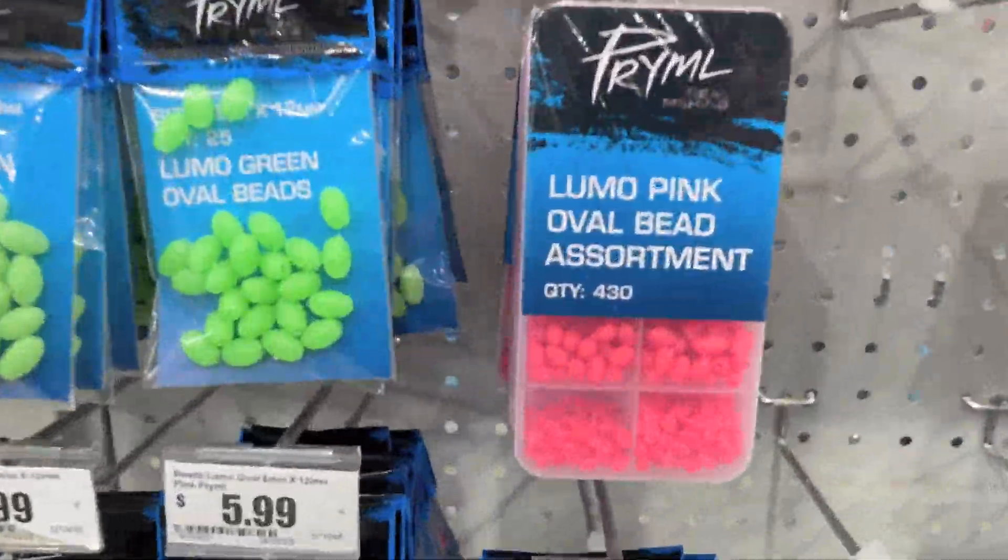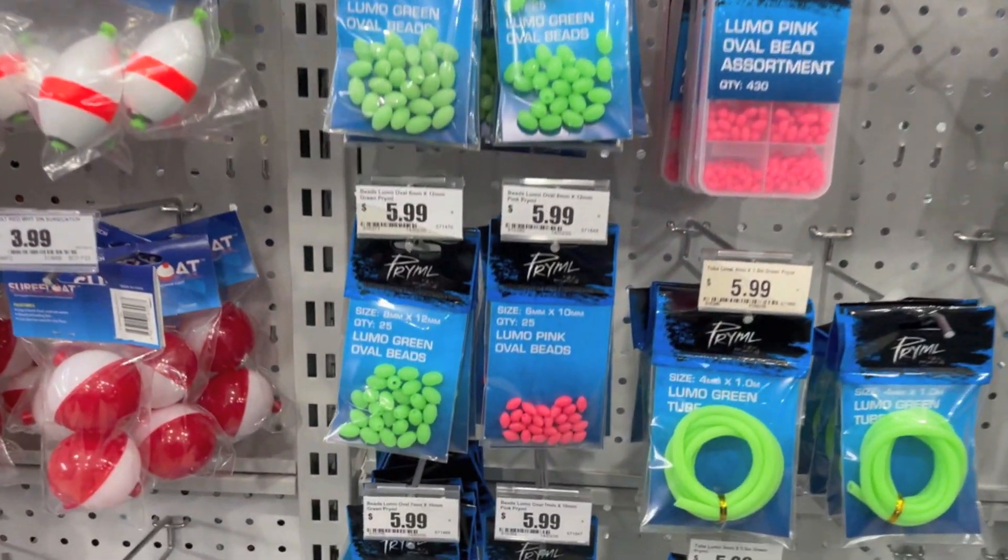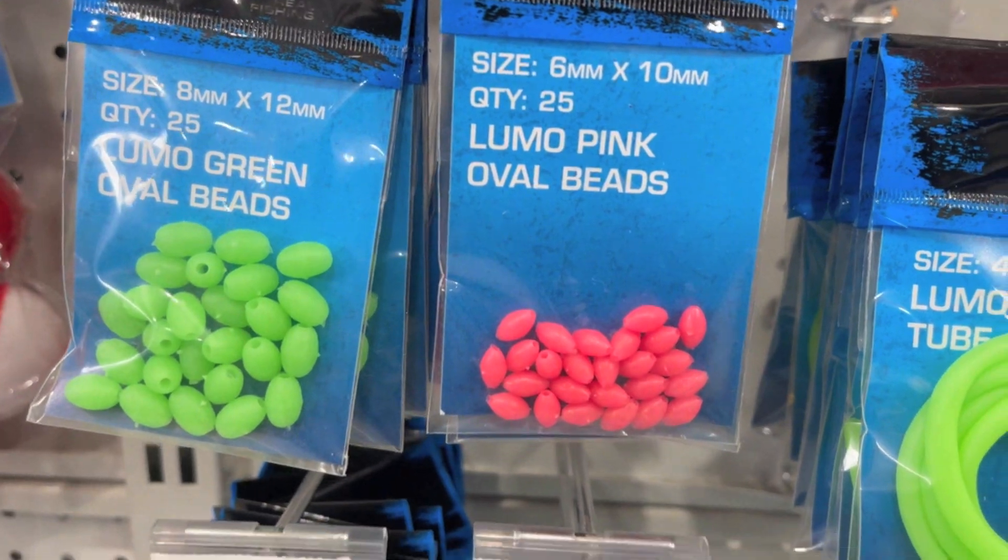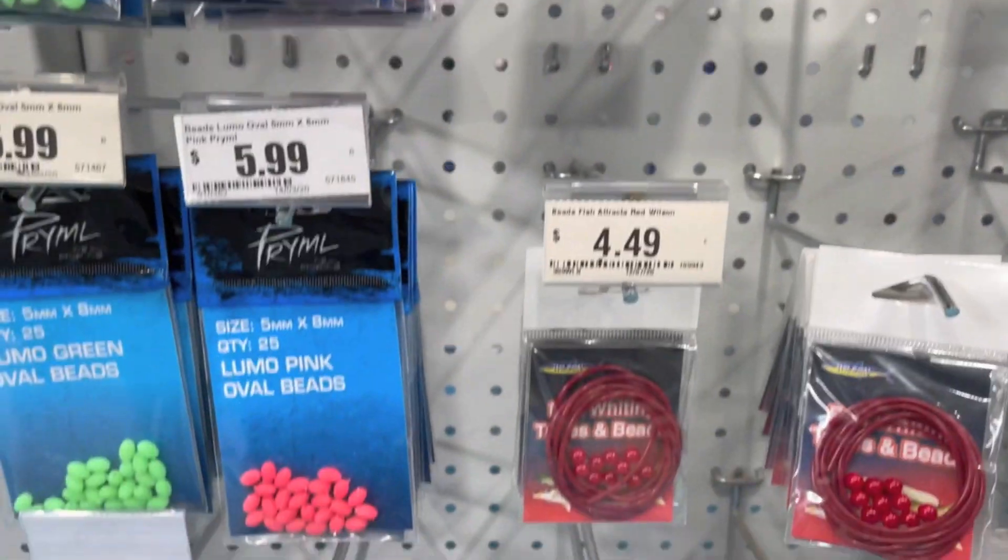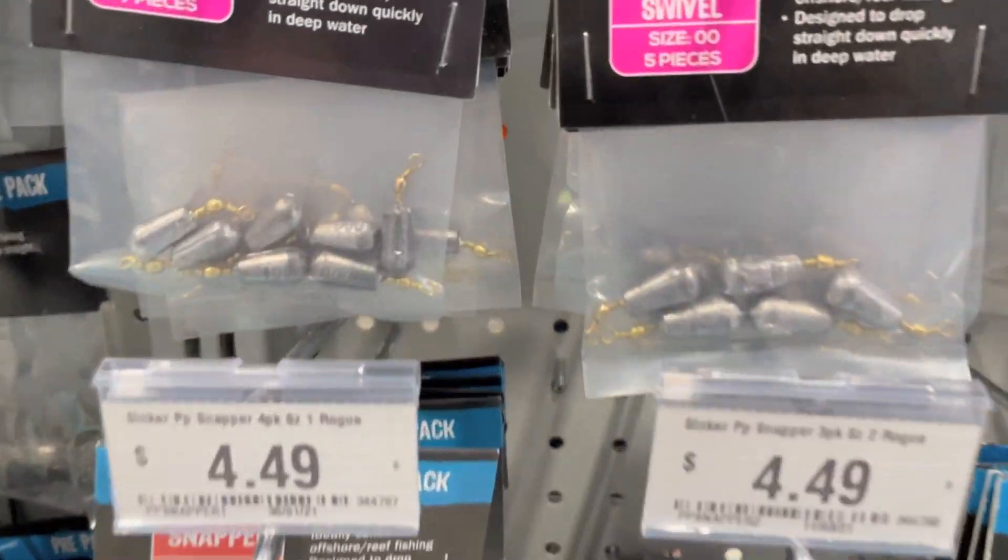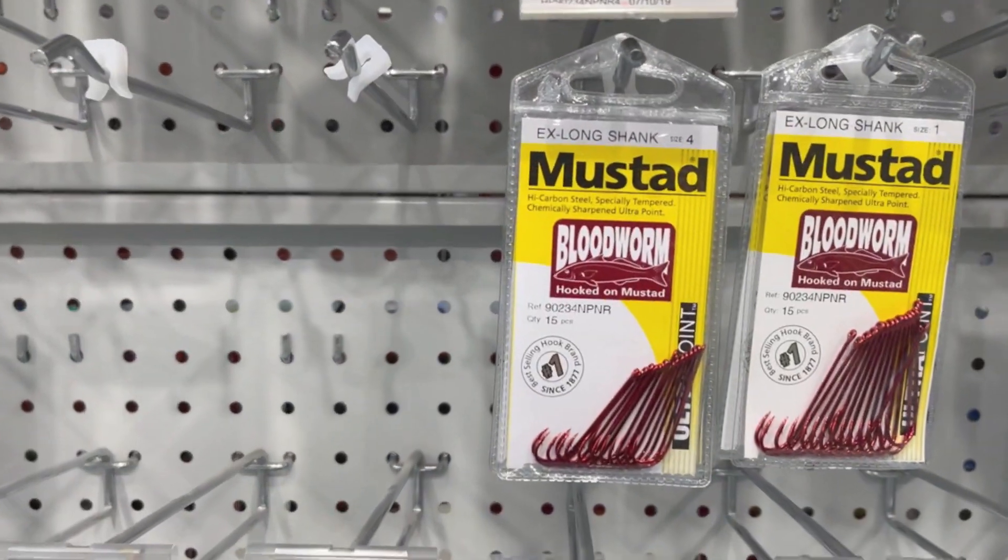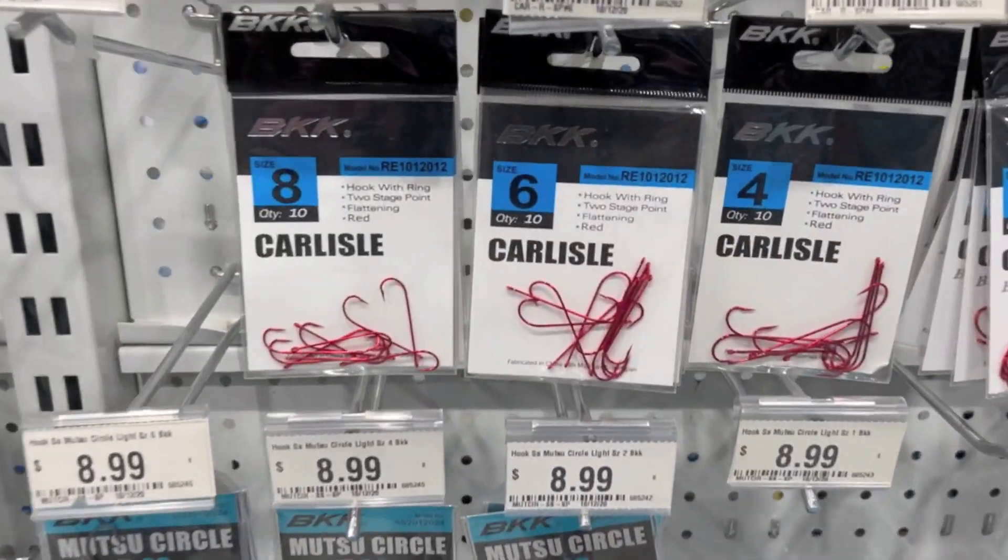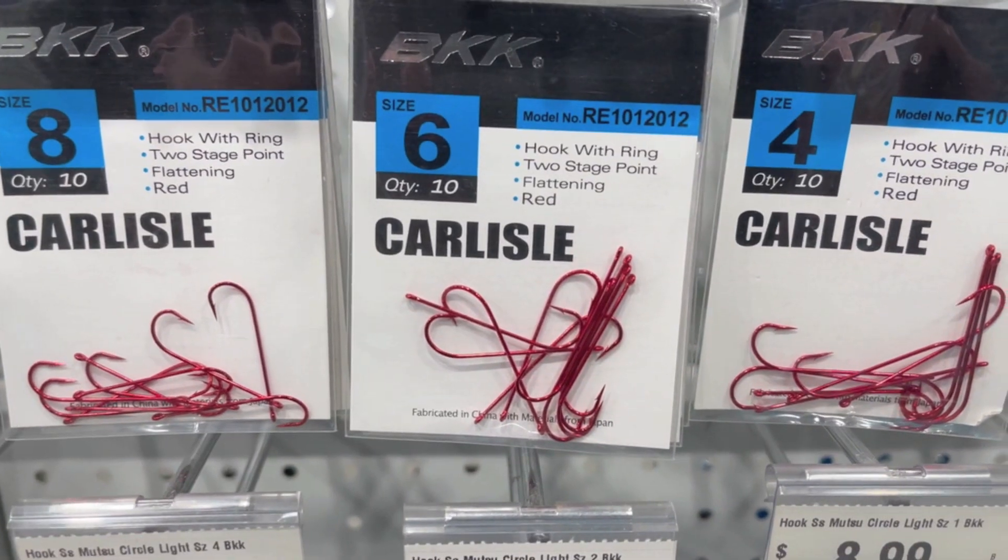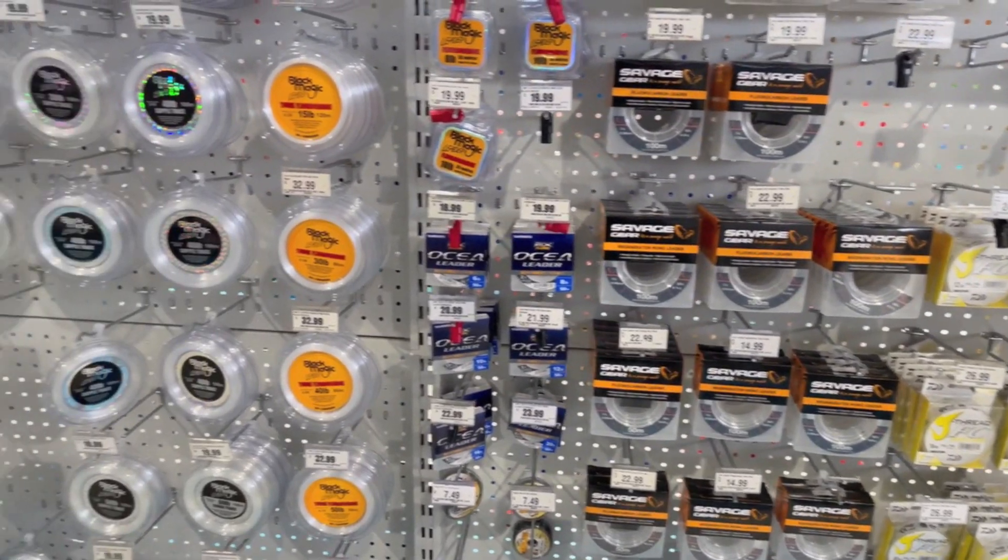Grab yourself some red beads. Don't be too fussy about the size but make sure it's proportionate to the rig that you're building. The other thing you'll need is some red tubing. Grab some bomb sinkers and some ball sinkers as well. Pick yourself up some long shank hooks or you could even go with some circle hooks. The last component you need to complete these rigs will be some fluorocarbon leader.